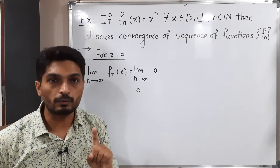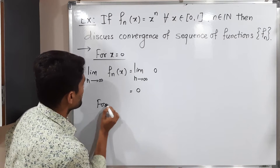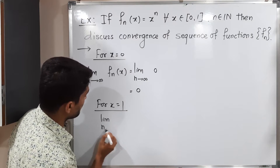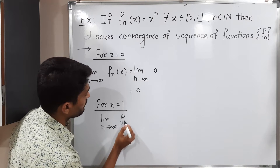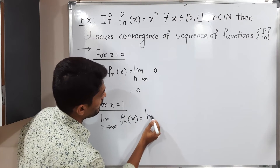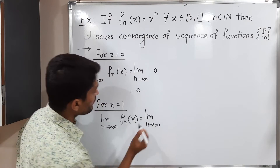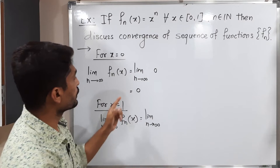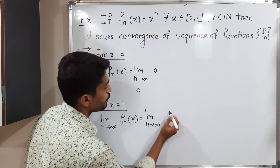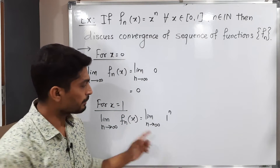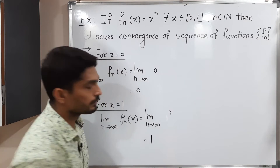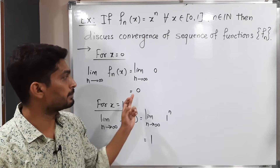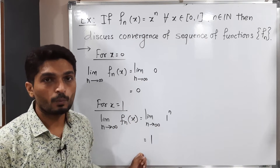Now we discuss for x = 1. The limit as n→∞ of fn(x) = limit as n→∞ of x^n. Putting x = 1, we get 1^n = 1. Since it is constant, applying the limit always gives value 1. So for x = 0 we have limit 0, and for x = 1 we have limit 1.